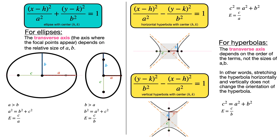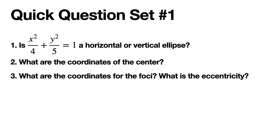You can go back to this slide to study these interrelationships. To end this lesson, here's quick question set number one: Is x squared over 4 plus y squared over 5 equals 1 a horizontal or vertical ellipse? — it's an ellipse because of the plus. What are the coordinates of the center? What are the coordinates of the foci? What is the eccentricity? Pause the video if you want more time.